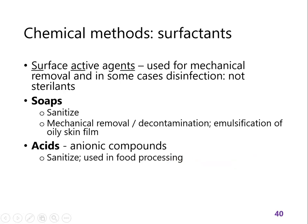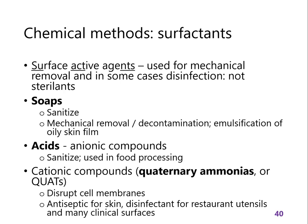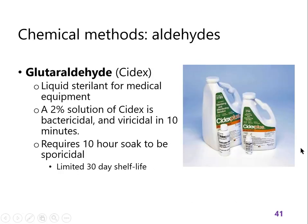There are also various acids used in food processing. They're not used because they're acidic per se — when put in water the proton comes off, leaving behind an anion. The more common surfactants seen in a clinic are the cations: the quaternary ammonias, or quats. These are very powerful chemicals that can disrupt cell membranes and are the active ingredient in many different products, including antiseptics for skin and for cleaning inert surfaces in clinics.